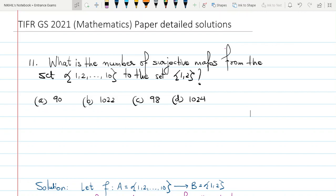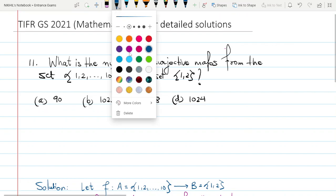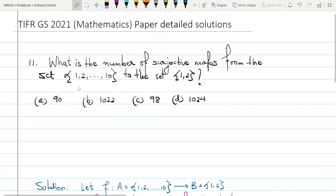That is, surjective means simply onto. We call it onto. Okay, so what is the problem says, that we need to find the number of surjective maps from the set 1, 2 till 10, that is from this set, to the set consisting of 1 to 2.